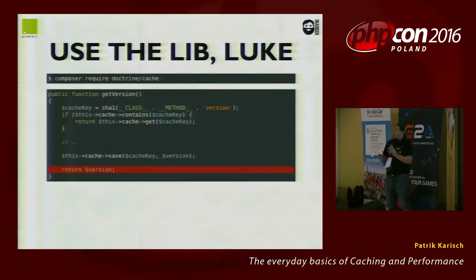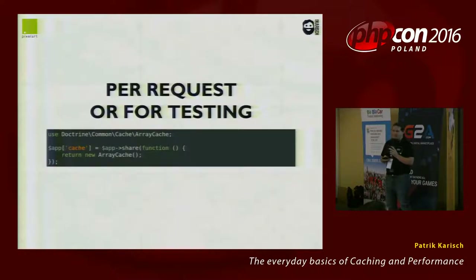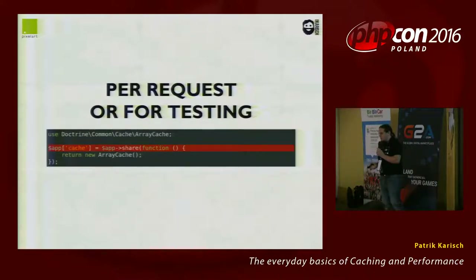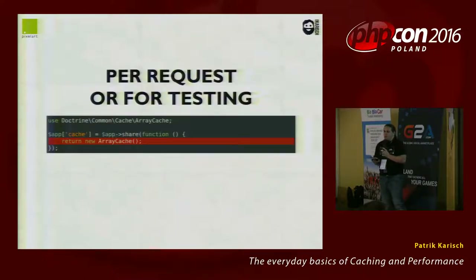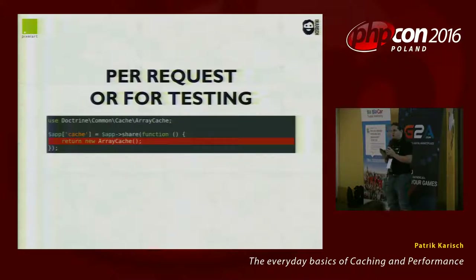With Doctrine Cache you have different implementations to use. For a single request or especially for testing, you should use the array cache. In this Silex example, I initialize my cache service with a new ArrayCache. It's for testing — I can't imagine a use case where I'd want an array cache in a production environment, so use it for testing.